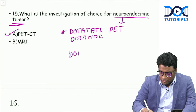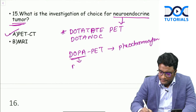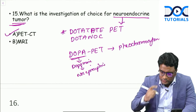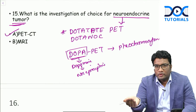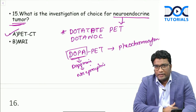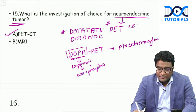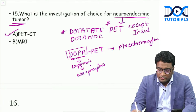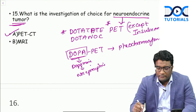DOPA PET is used for pheochromocytoma. Remember: DOPA becomes dopamine, and dopamine is a precursor for catecholamines - so DOPA PET evaluates catecholamine-producing tumors like pheochromocytoma. DOTATATE or DOTANOC bind to somatostatin receptors and evaluate neuroendocrine tumors. All neuroendocrine tumors that are somatostatin receptor positive will be diagnosed by DOTATATE PET, except insulinoma. Insulinoma is somatostatin receptor negative, so except insulinoma, all others are diagnosed by DOTATATE PET.